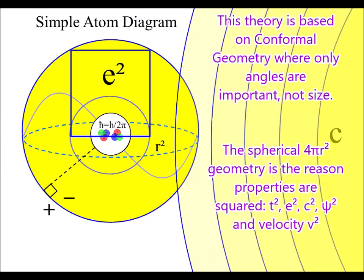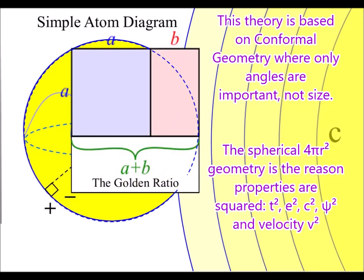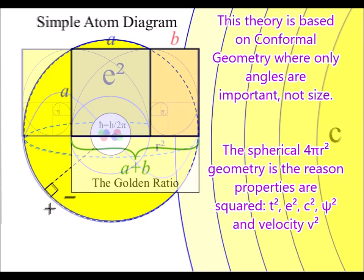The spontaneous absorption and emission of light forms the a and b of the golden ratio, forming the geometry of the golden rectangle.